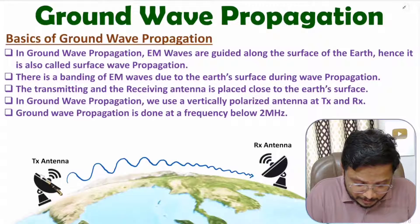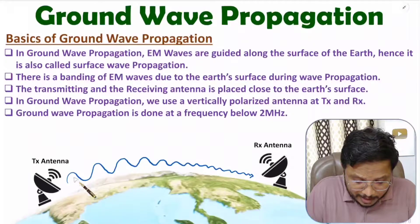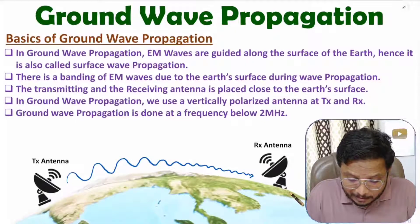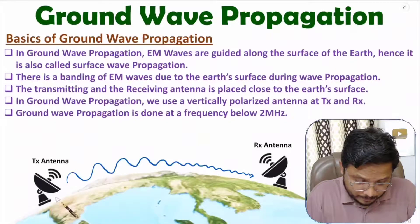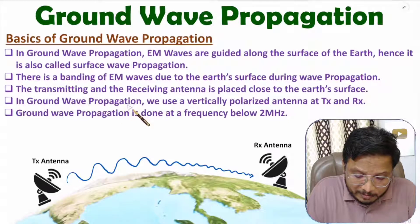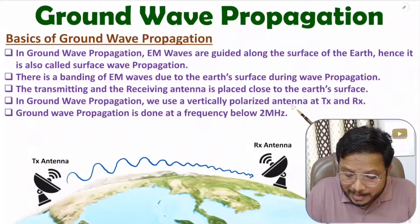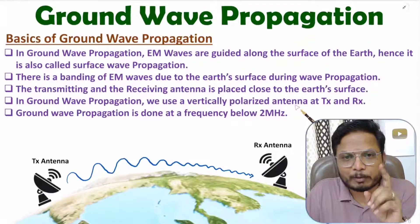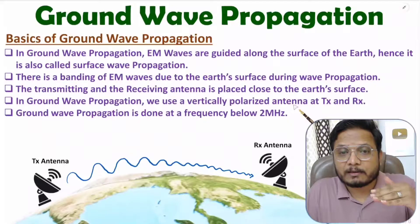Here you can observe the transmitting antenna and the receiving antenna. Because EM waves are guided along the surface of earth, you don't need to keep these antennas at a higher height — they are placed close to the earth's surface. In ground wave propagation, we transmit a vertically polarized signal using a vertically polarized antenna.